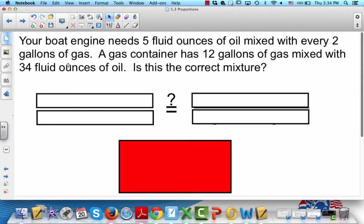Now, how can you use this? Your boat engine needs 5 fluid ounces of oil mixed with every 2 gallons of gas. So you've got a boat. The engine needs 5 fluid ounces of oil mixed with every 2 gallons of gas. A gas container has 12 gallons of gas mixed with 34 fluid ounces of oil. Can you use the gas in this container in your boat?